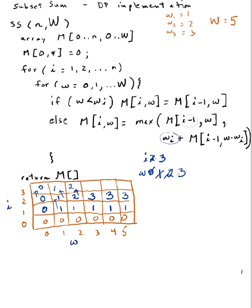Increment w. Is 3 less than 3? No. So m[3][3] will be the max between m[2][3] and w sub 3 which is 3 plus m[2][w minus w3] which is m[2][0]. m[2][3] has value 3 and m[2][0] has value 0. Max between 3 and 3 plus 0 gives us 3.